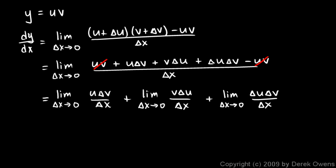Now, this is cool. Think about what happens to each of these three things as delta x approaches 0, as it says in the limit in each case.